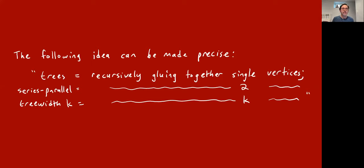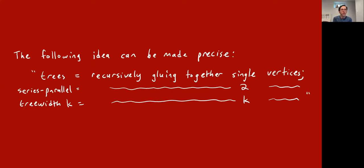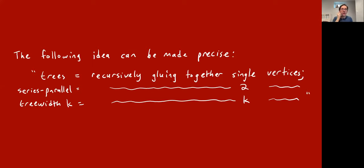The shortest way to explain what a tree-width-k graph is — not precisely, but informally — is: a tree can be thought of as formed by recursively gluing together single vertices. You introduce a vertex and attach it by an edge to a vertex you already have. Series-parallel graphs are what you get by starting from an edge and grafting on pairs of vertices. In some sense, tree-width-k graphs are those you can get by recursively gluing together graphs at k vertices.